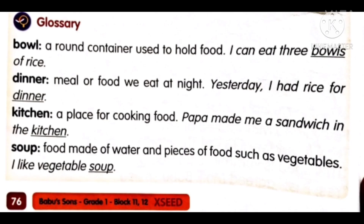Before that, let us see some glossary. Bowl: it is a round container normally used to hold food — we eat sweets, soup, or even rice in it. Dinner: the food which we eat at night. Kitchen: it is a place for cooking food. Soup: a food made of water and pieces of food such as vegetables — we can make any soup using vegetables or other things.